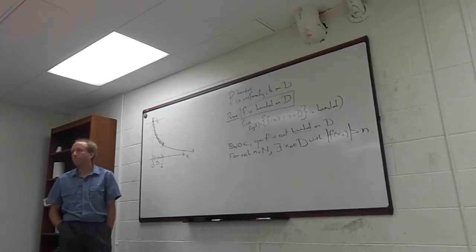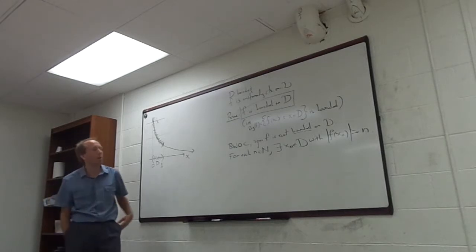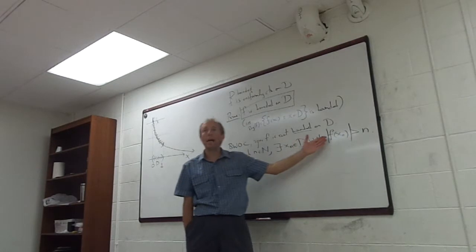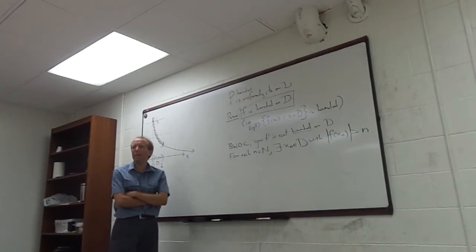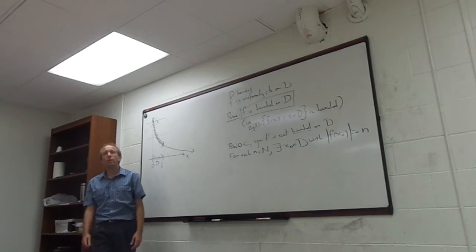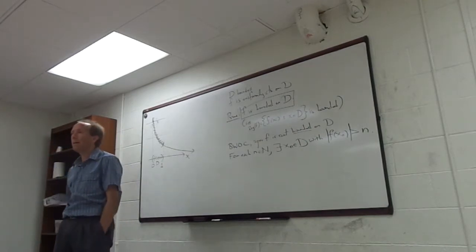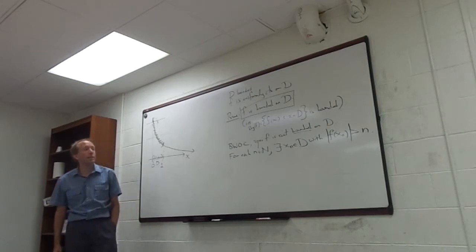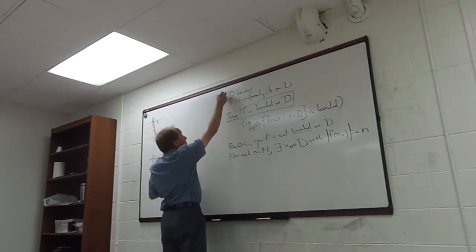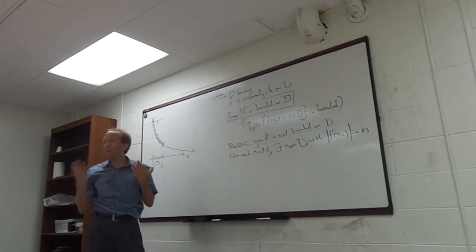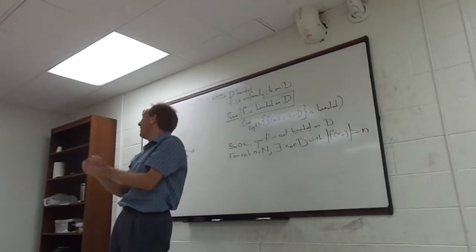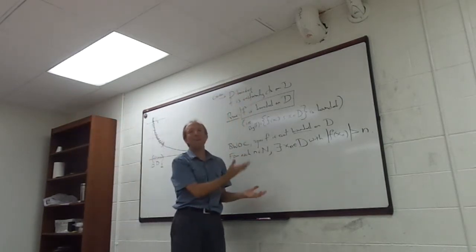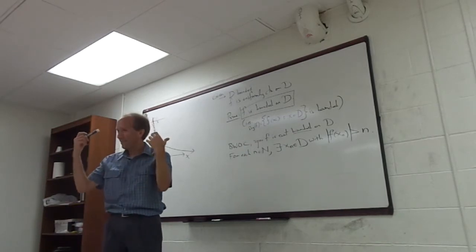I'm starting to form a sequence, indexing for each natural number. x_n is a bounded sequence because D is bounded — that was given. By the Bolzano-Weierstrass theorem, every bounded sequence has a convergent subsequence. So there exists a subsequence x_{n_k} that converges to some x. Keep making flashcards — we're going to have another definitions quiz before Thanksgiving.